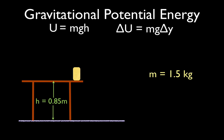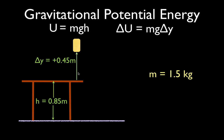The most common equation for gravitational potential energy is P = mgh, but the official symbol is U, capital U. When you calculate potential energy, you're usually calculating the change in potential energy: delta U equals mg times the change in height, or the change in the Y position of the object. We're going to use this equation for an object with a mass of 1.5 kilograms. In the first case, we're going to raise it up 0.45 meters, so the change in Y is plus 0.45 meters, using the top of the table as our reference surface where Y equals zero.